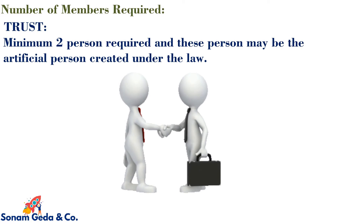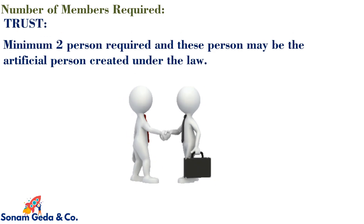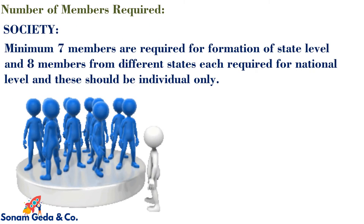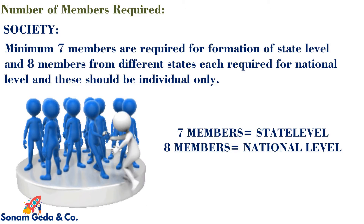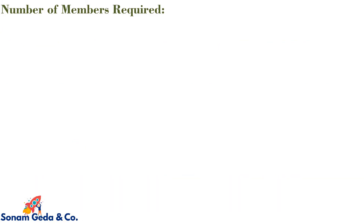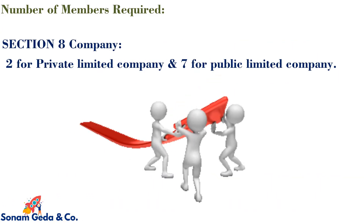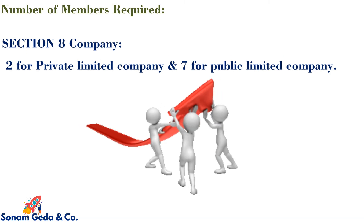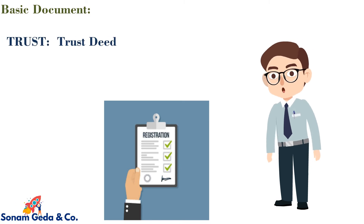Number of members required: in the case of a Trust, a minimum of two persons are required, and these persons may be artificial persons created under the law. For a Society, seven minimum members are required for state-level formation, and eight members from different states are required for national level — these should be individuals only. For a Section 8 Company, two members for a private limited company and seven members for a public limited company are required.